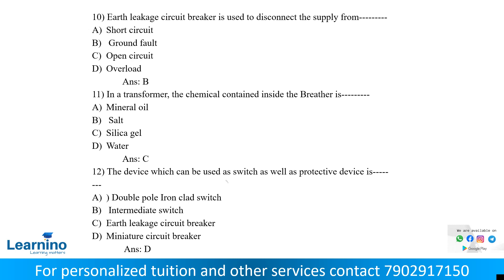In a transformer, the chemical contained inside the breather is silica gel. The device which can be used as both a switch and a protective device is the MCB — miniature circuit breaker. A fuse handles short circuits, but an MCB handles overload conditions and can be reset automatically, unlike a fuse which must be replaced. The answer is D.